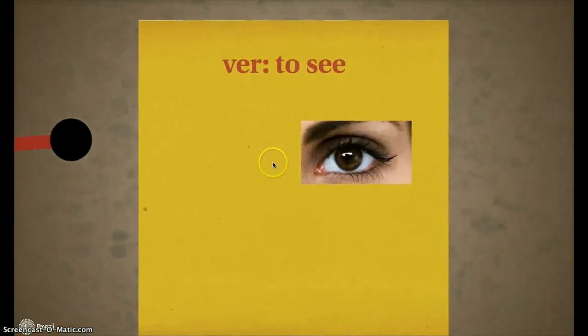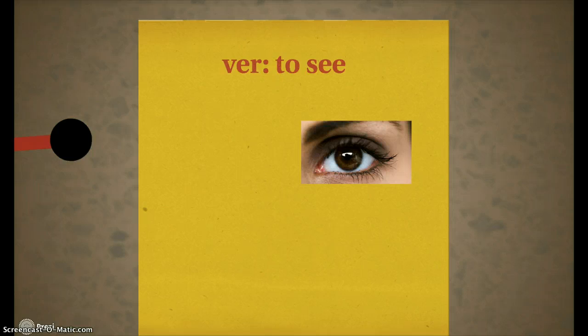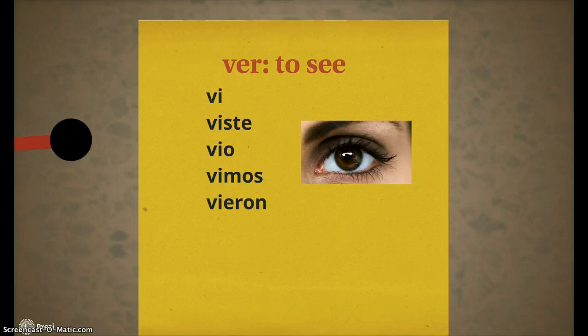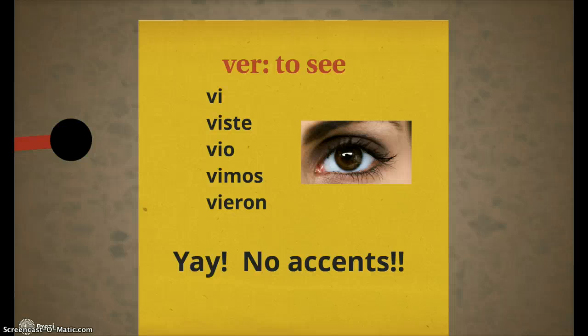And then we have ver, which rhymes with dar. When it's conjugated, it turns into vi, viste, vio, vimos, vieron. Remember the other one was di, diste, dio, dimos, dieron. This one is vi, viste, vio, vimos, vieron. And no accents — yay!